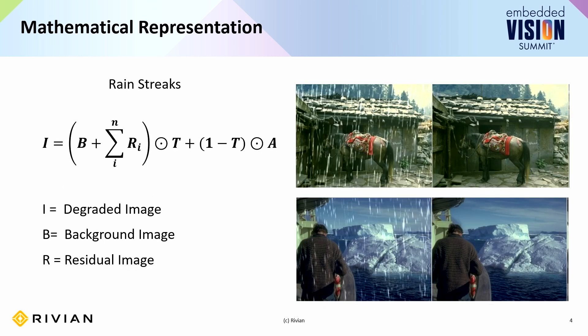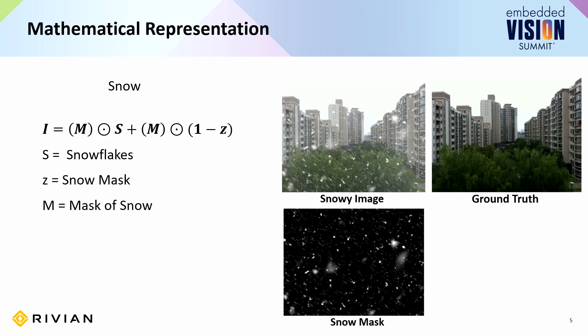Very similar to this, you can also have mathematical representations of rain streaks. It looks like a complicated equation, but it essentially divides into a residual image, background image, and the rain streak map. Similarly, you can also model snow degradations — a snow mask very similar to the raindrop mask, where the degraded image is a combination of the snow mask, the background, and the residual image.